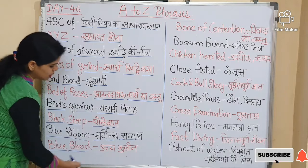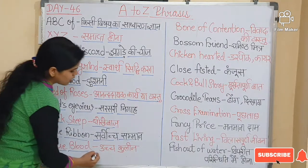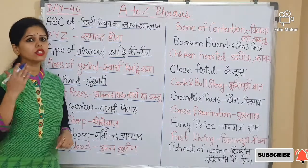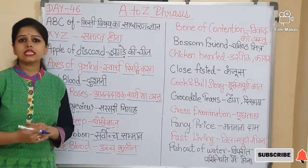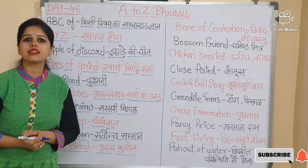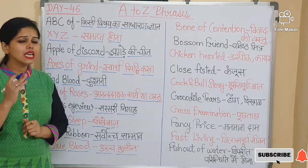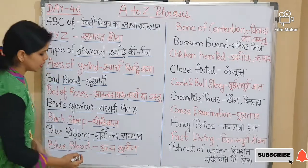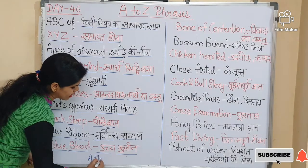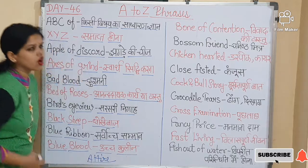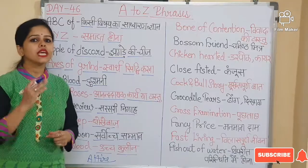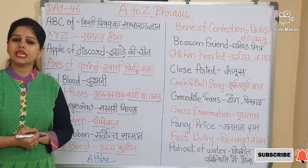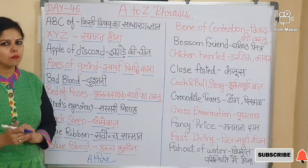Next is 'Blue blood'. Blue blood means uch kuleel — of noble or aristocratic birth. Note that the word 'attire' here means outfit or dress. The sentence is: His attire and luxury show that he is a blue blood.